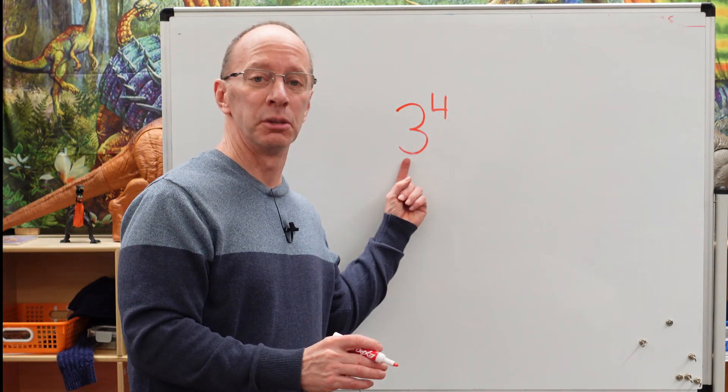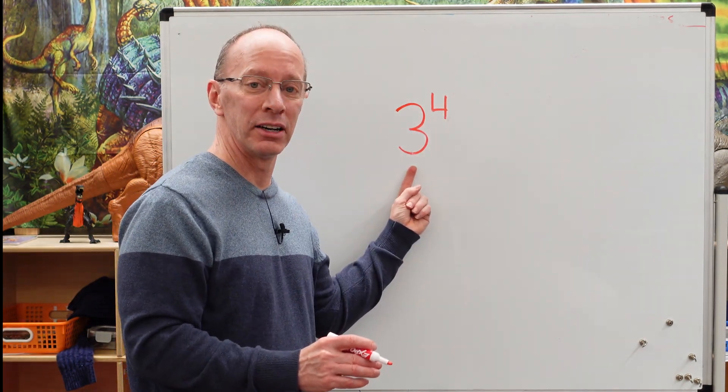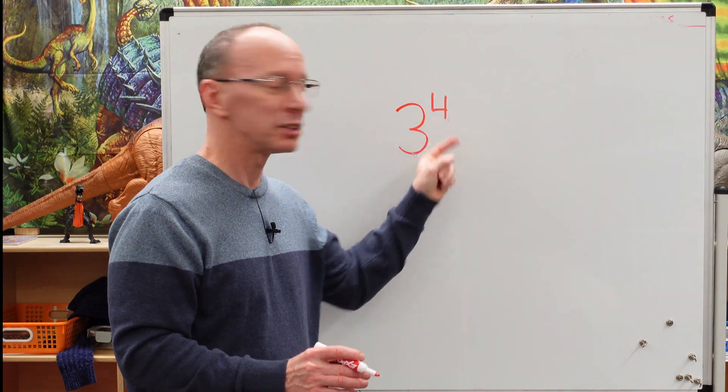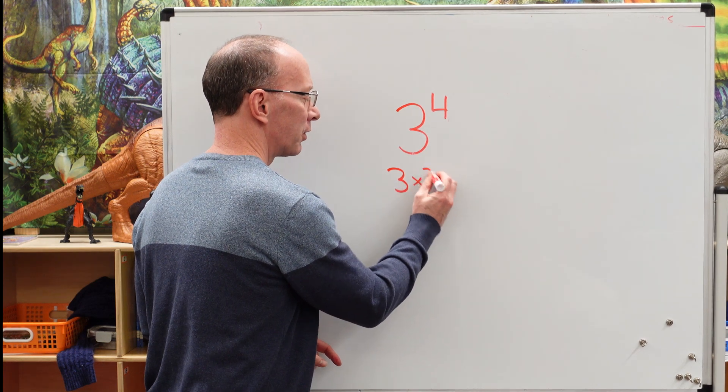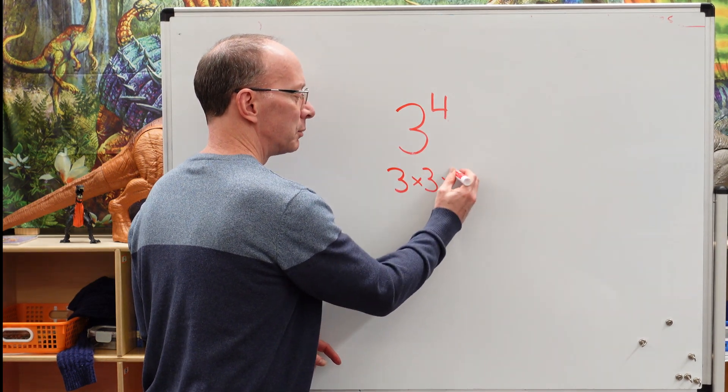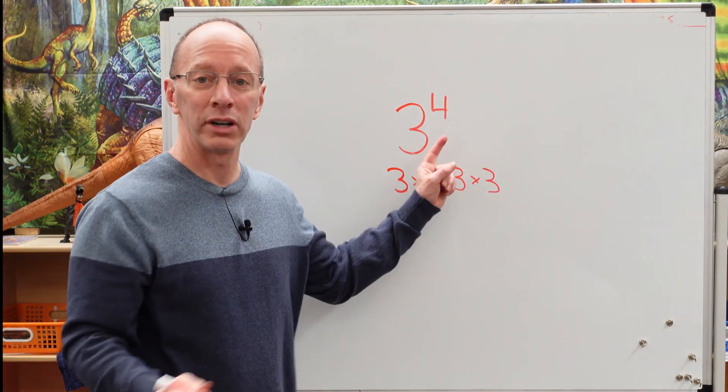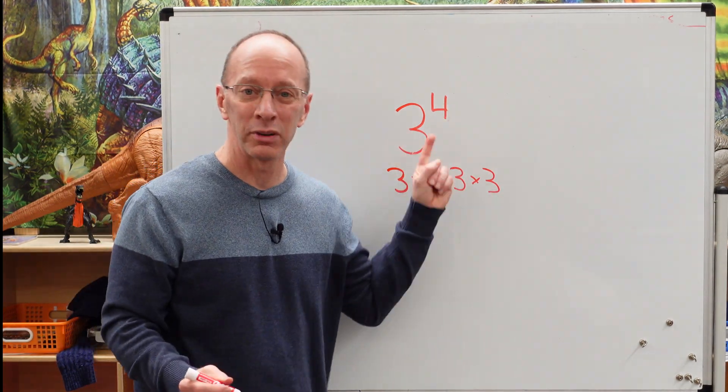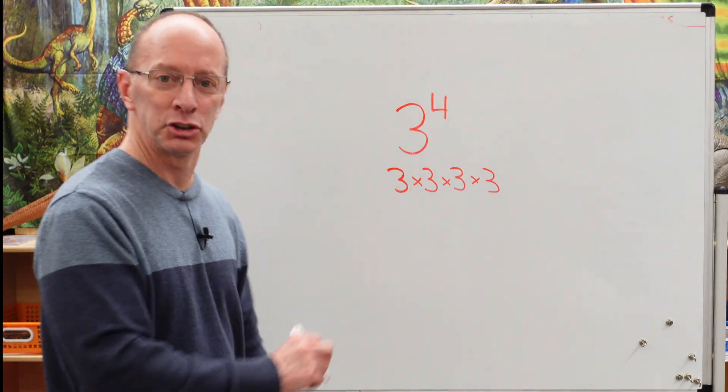Again, this is the base. This is the exponent. I write this number here, this amount of times. So I'll go three times three times three times three. I wrote it four times. This is what this exponent is telling. So you ready to start multiplying? Yeah, let's do it.